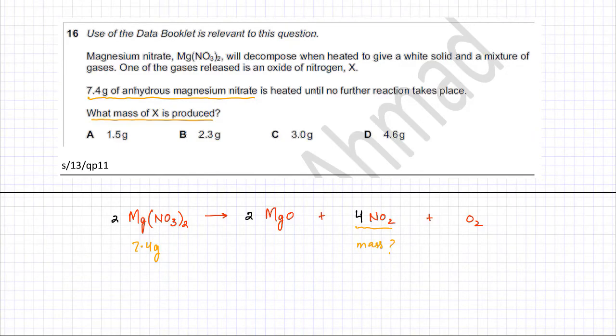Since the mass of magnesium nitrate is already given, we can find the moles. Moles equals mass which is 7.4 divided by the MR of magnesium nitrate. Magnesium is 24, plus there are 2 NO3, so that's 2 multiplied by the MR of NO3 which is 14 plus 16 times 3.